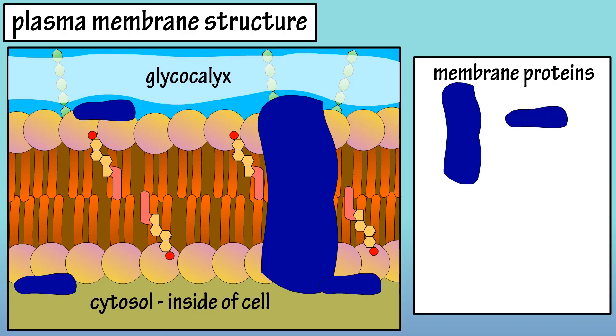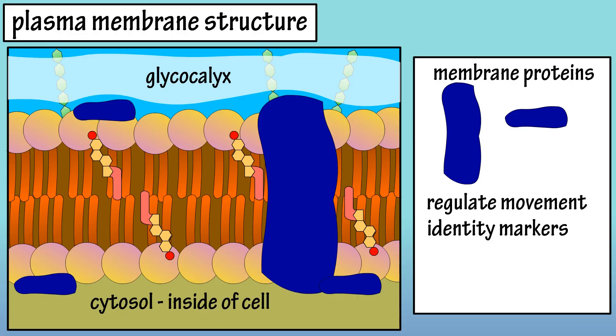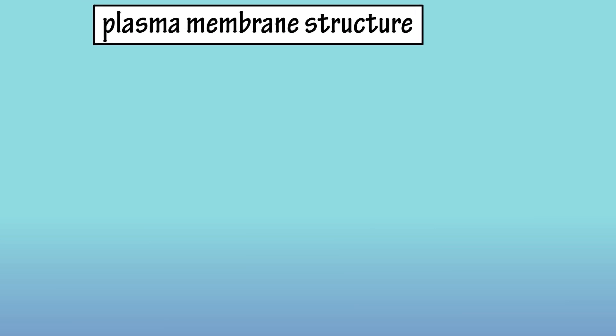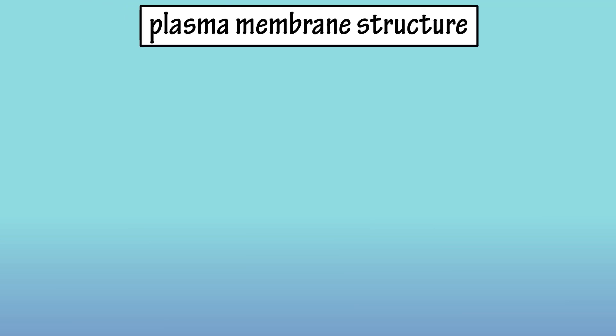These membrane proteins have many important functions. Transport proteins regulate the movement of substances across the membrane. Some act as identity markers to communicate with other cells. Some are enzymes taking part in chemical reactions. Some act as anchoring sites, securing the cytoskeleton to the membrane. And some are part of cell-to-cell attachments. And that would be the basics on the structure of the plasma membrane.